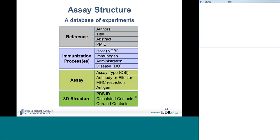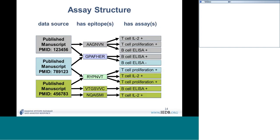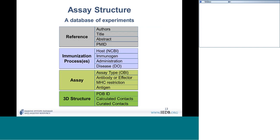The entirety of the IEDB database is a database of experiments that are epitope-specific. Every epitope comes from a reference, and we have a set of fields describing the reference itself — author, title, journal, and published page numbers — so you can search by any of those. We also capture the immunization procedure: how the host was exposed and developed an immune response. We have a large set of fields describing this entire process.